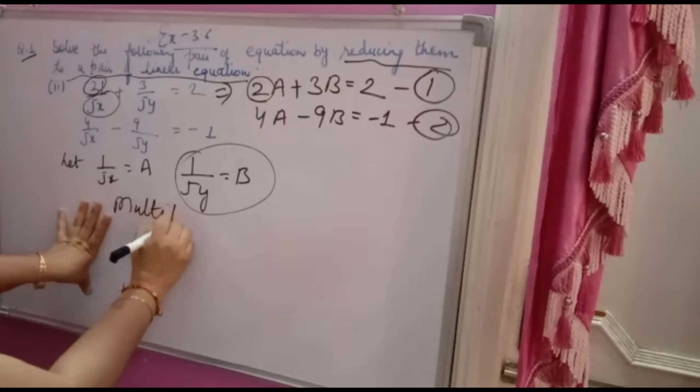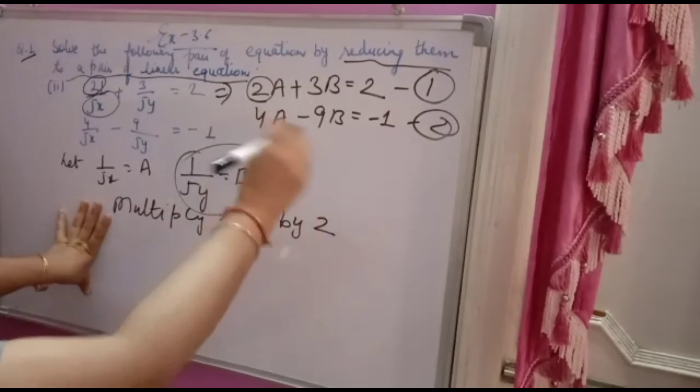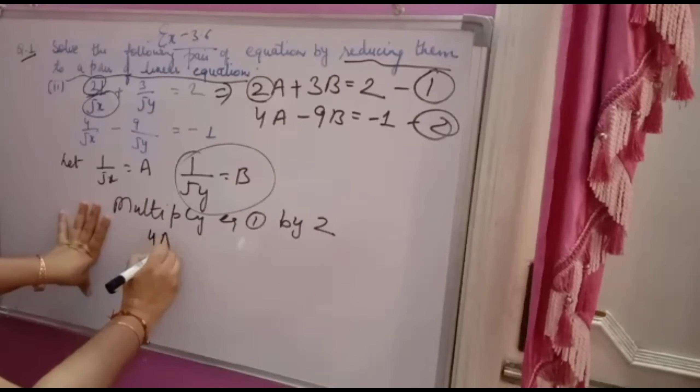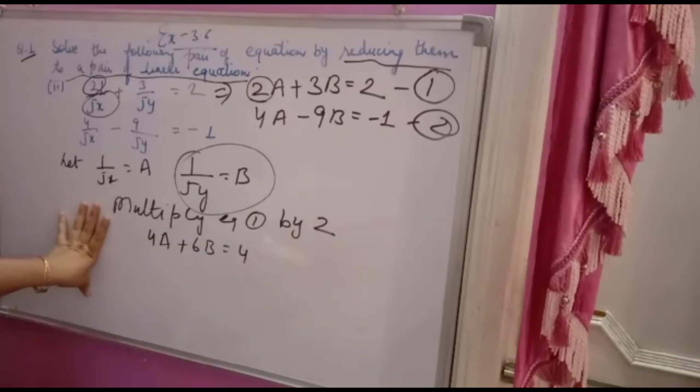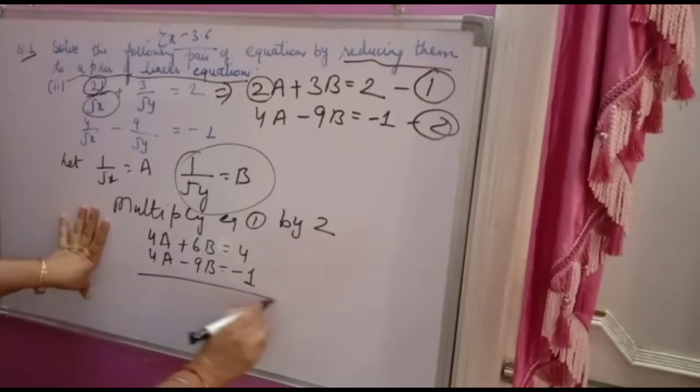Multiply equation 1 by 2 for equating the coefficient of A. So you will get 2A into 2 is 4A, 2 into 3 is 6B, is equal to 4. The full equation you have to multiply. Whenever you are multiplying, write the second equation as it is because already the coefficient of A is 4. Now you can subtract.